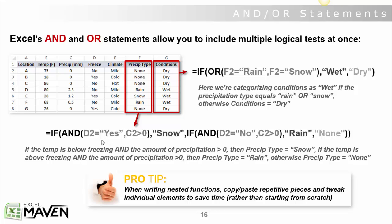That's our freezing column, which tells me that the temperature is freezing. It's below 32 degrees and C2 is greater than zero. So precipitation is greater than zero, then precipitation type equals snow.